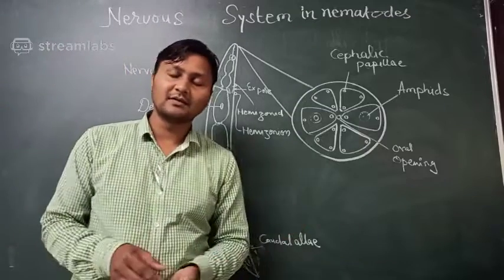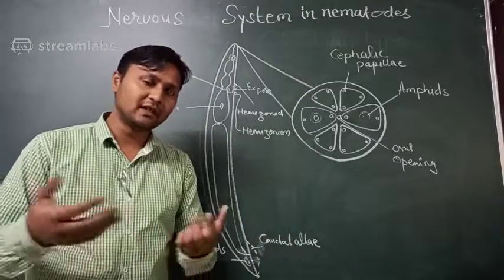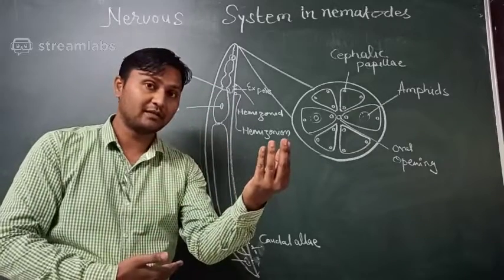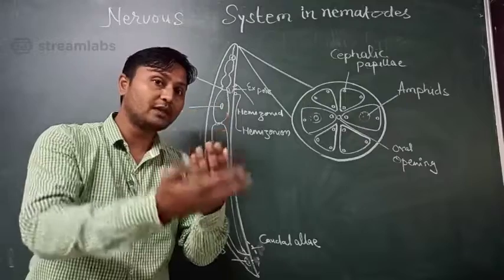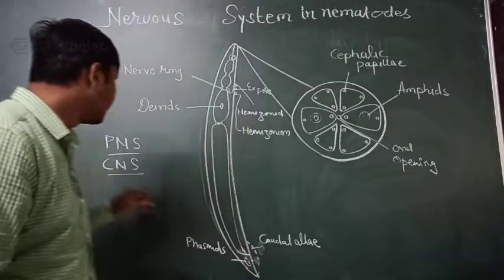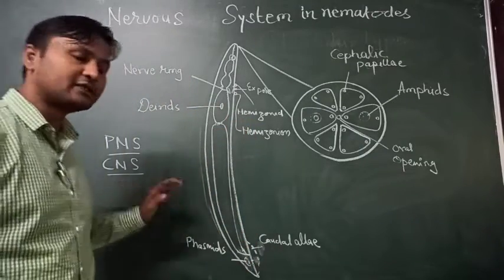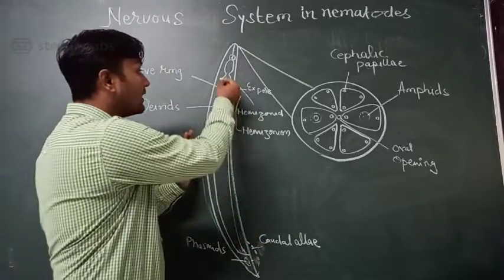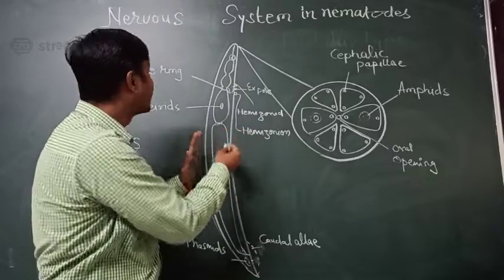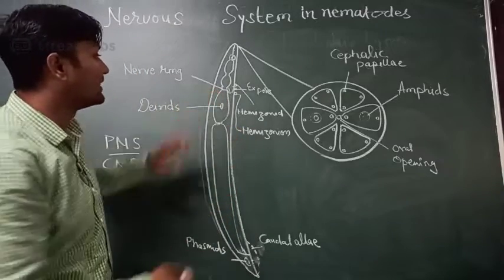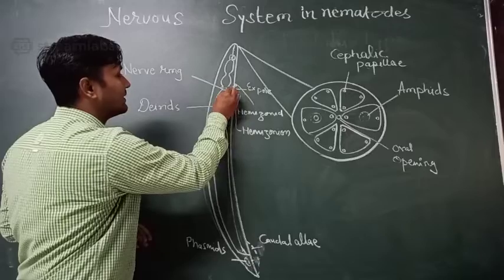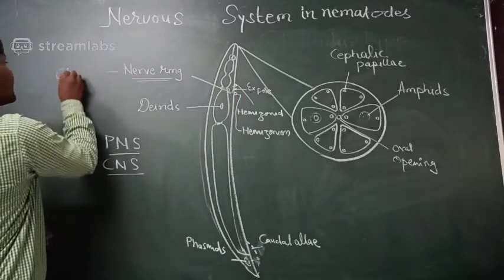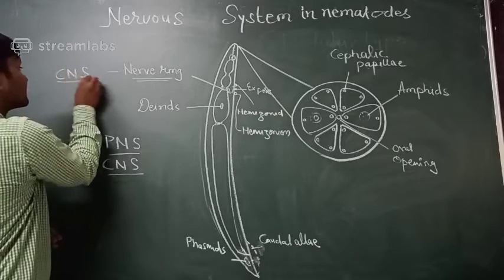The peripheral nervous system consists of the nervous points present on the periphery of the nematode body, from the cuticle of the nematode body. The central nervous system is present in the center of the body, in the inner volume. You can see here the nerve ring and nerve band — that is the central nervous system, CNS.